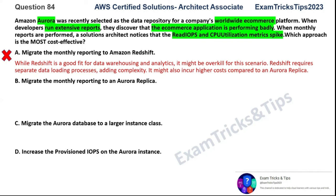Option C: migrate the Aurora database to a larger instance class. Any time you see the solution for performance is vertical scaling — a larger instance class or adding more servers — that is always a wrong answer. Just using a larger instance class cannot give you permanent freedom from performance issues. When you have really heavy load and heavy reporting, this is not going to help. In the context of AWS architecture principles and the Well-Architected Framework, a larger instance is never the correct answer; at least they're not going to test you on that. Option C is wrong.